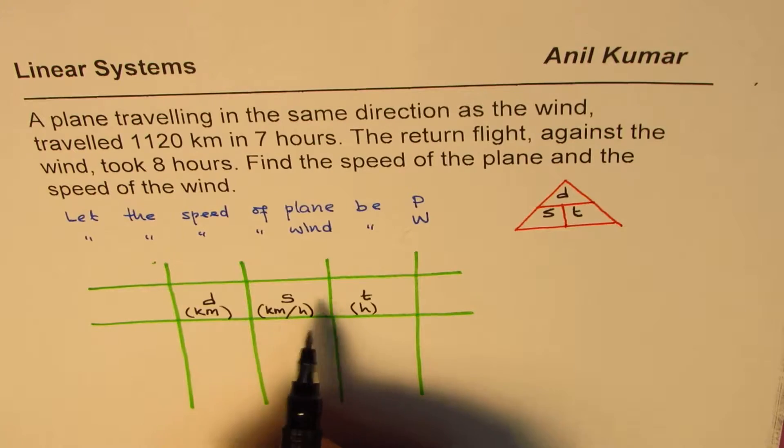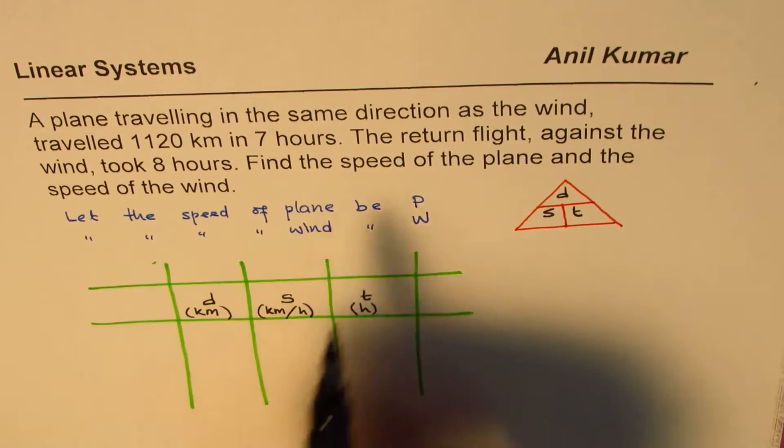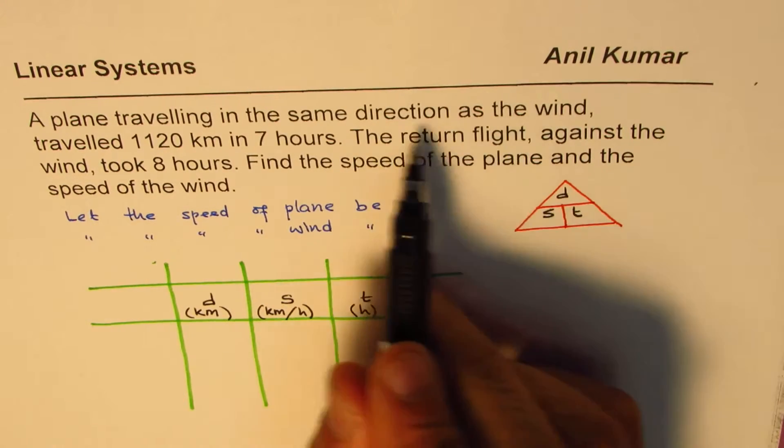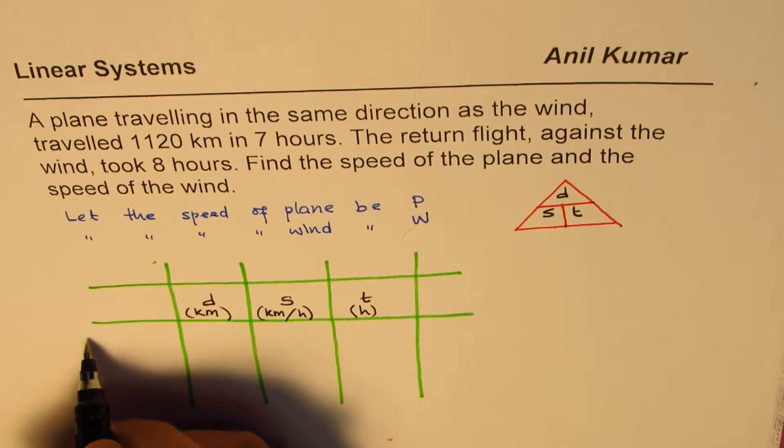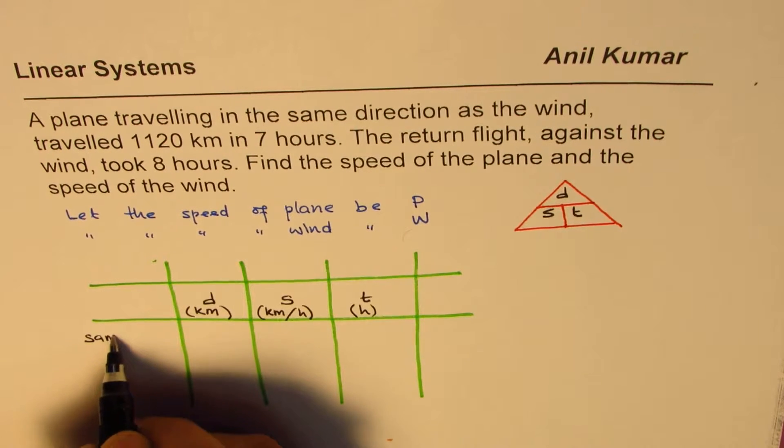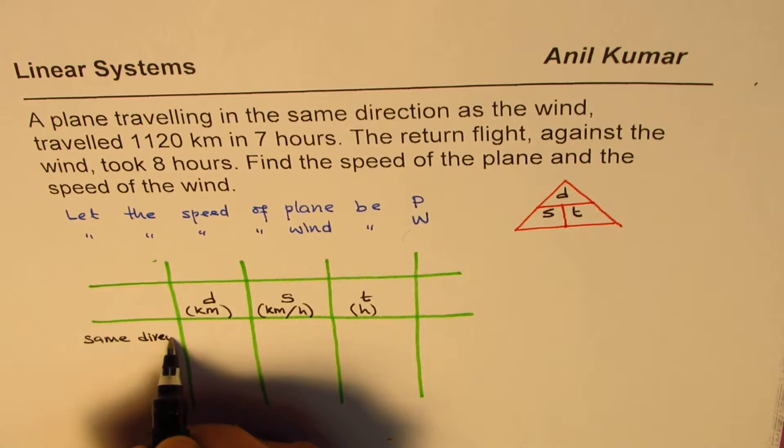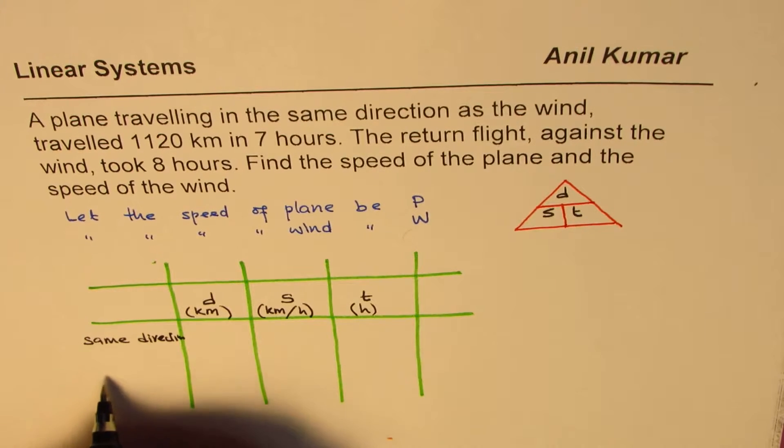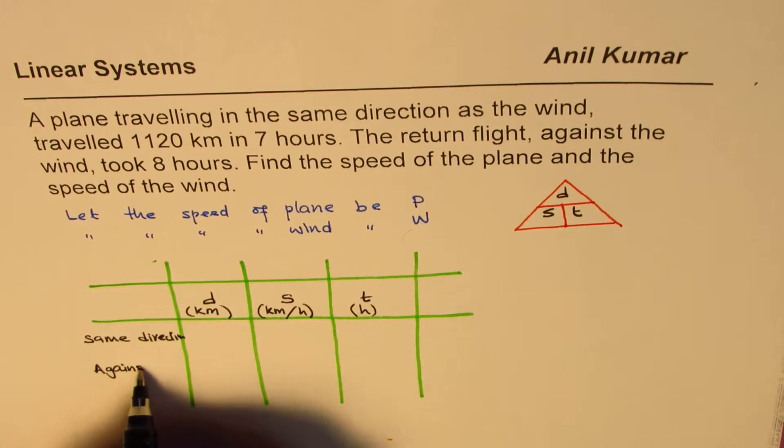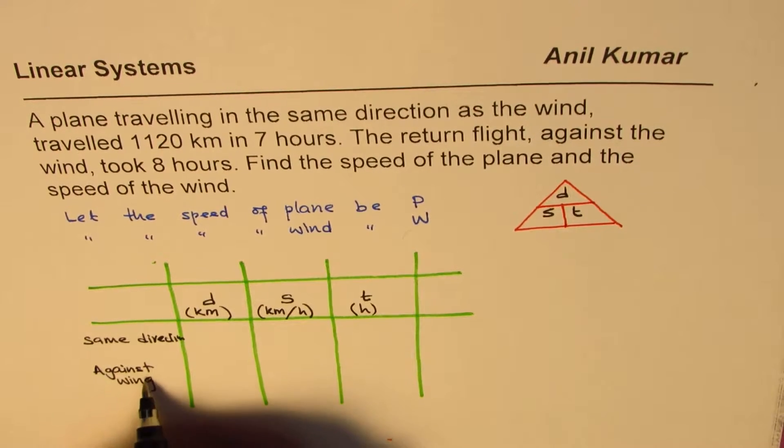And we have two scenarios. In one, the plane is going in the direction of the wind, so same direction. And the other case is against wind, so plane is going against wind.